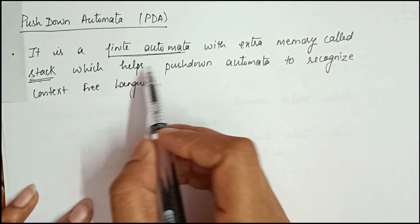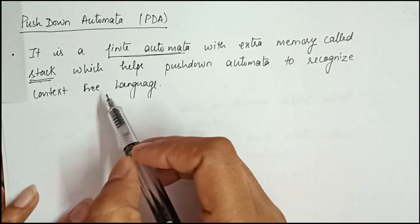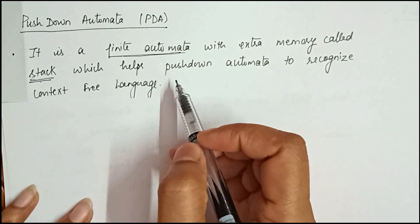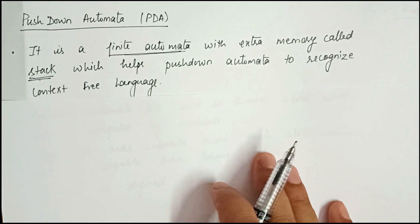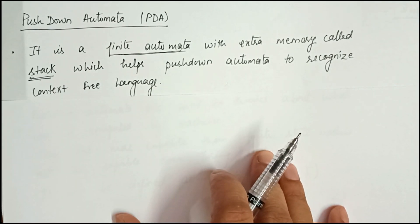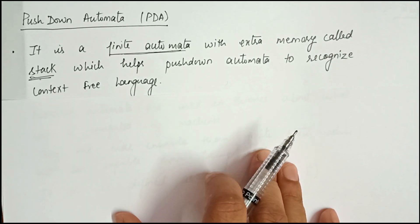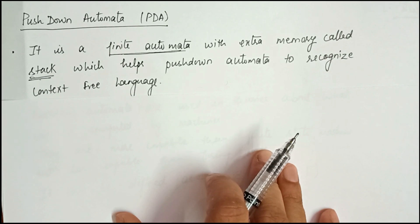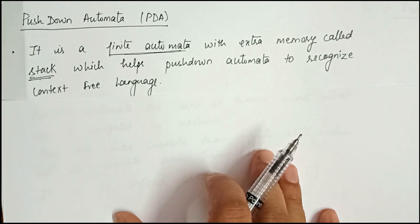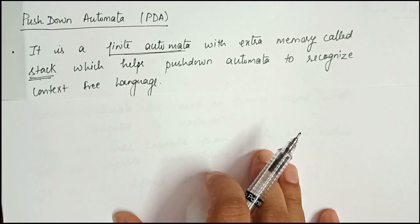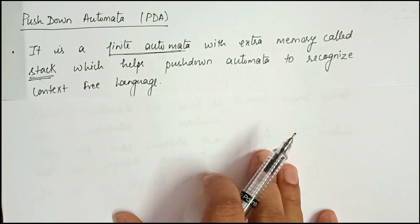The stack helps the pushdown automata to recognize context-free languages. As we already discussed, the machine that generates the context-free language is called pushdown automata. In the PDA, we use extra memory called a stack which helps the PDA to recognize the context-free language.